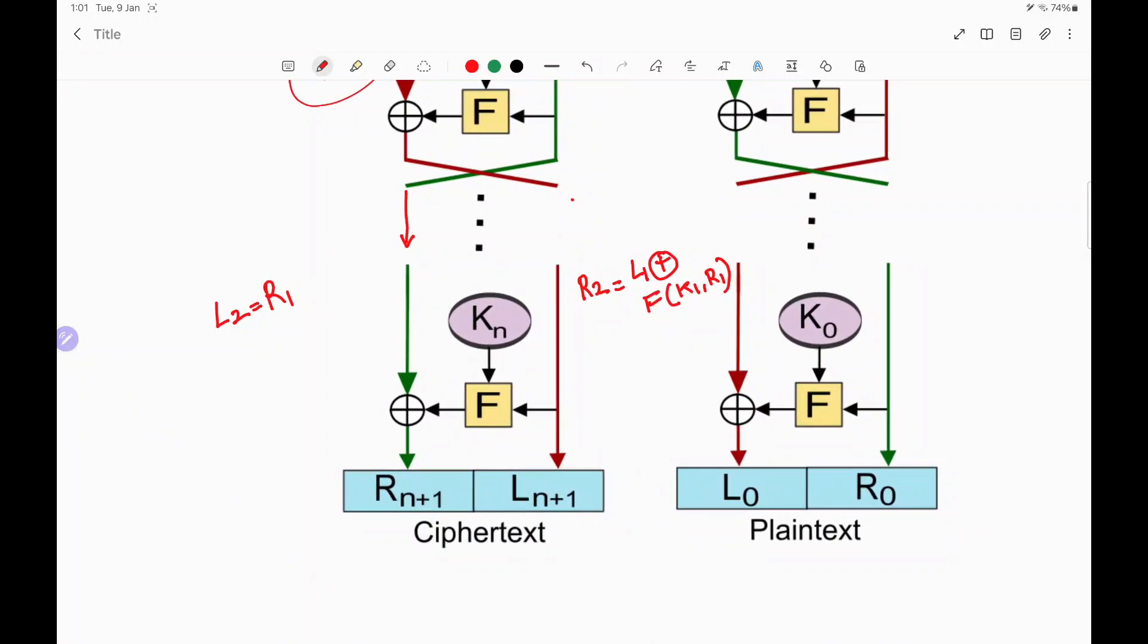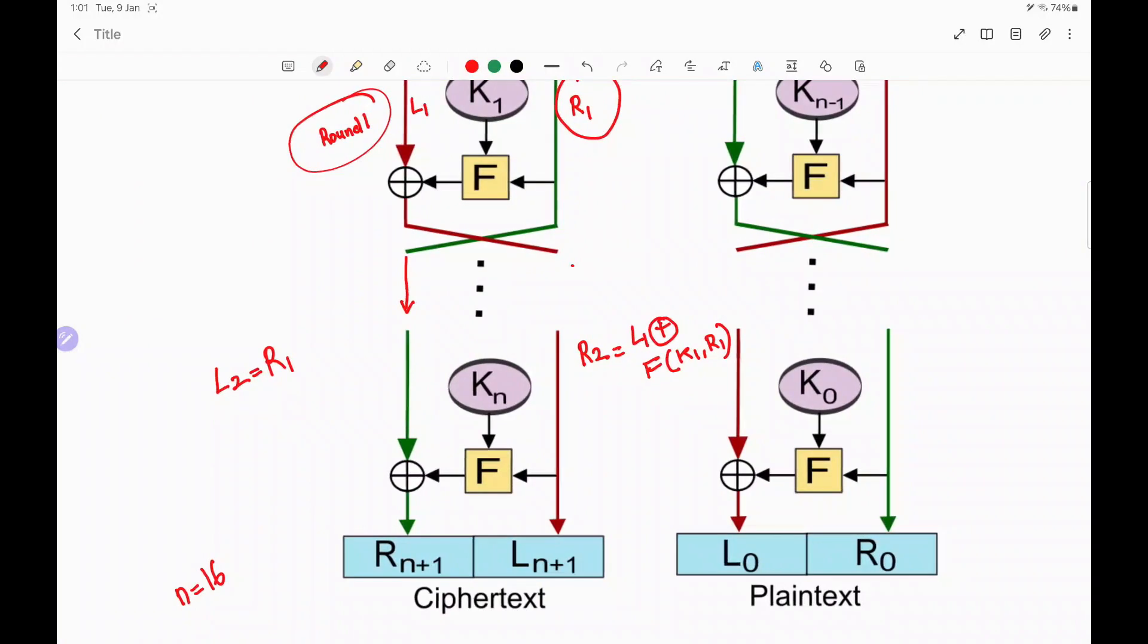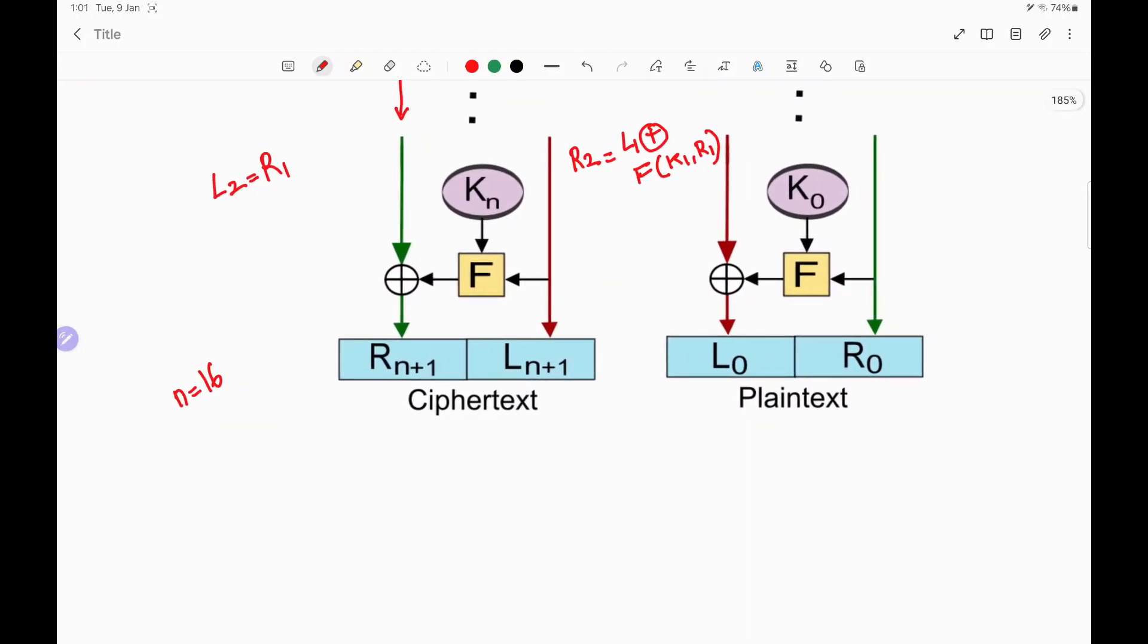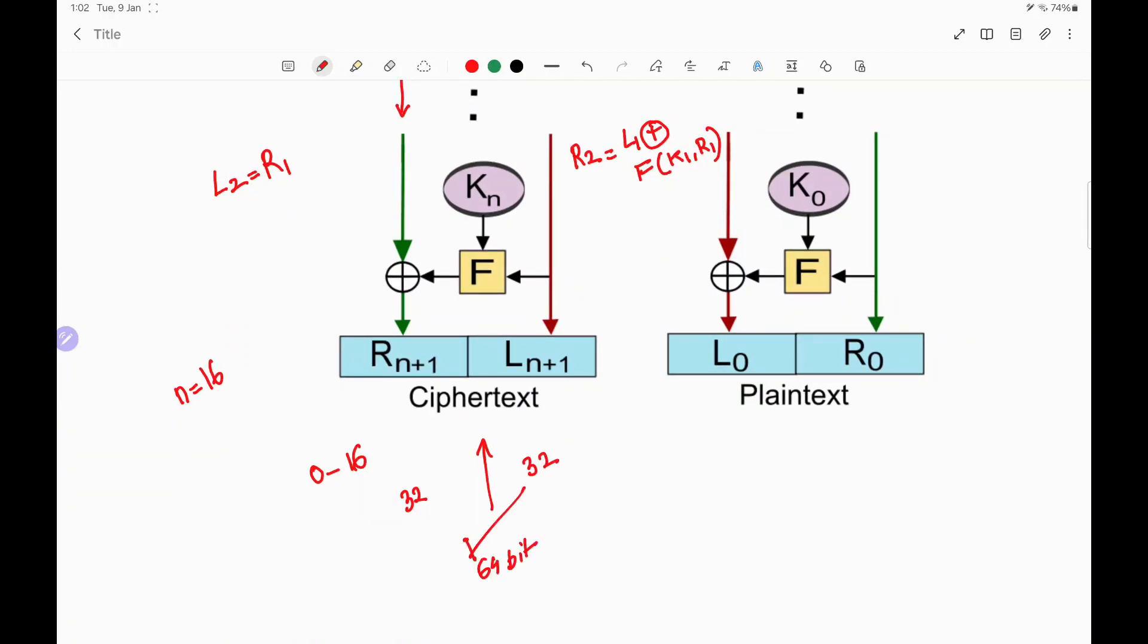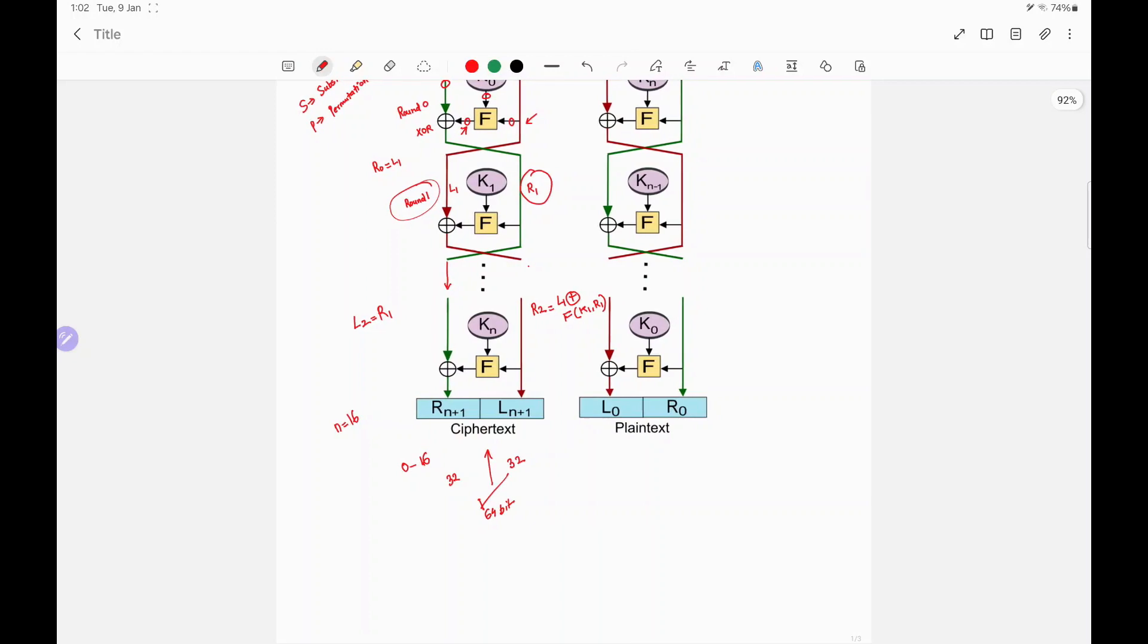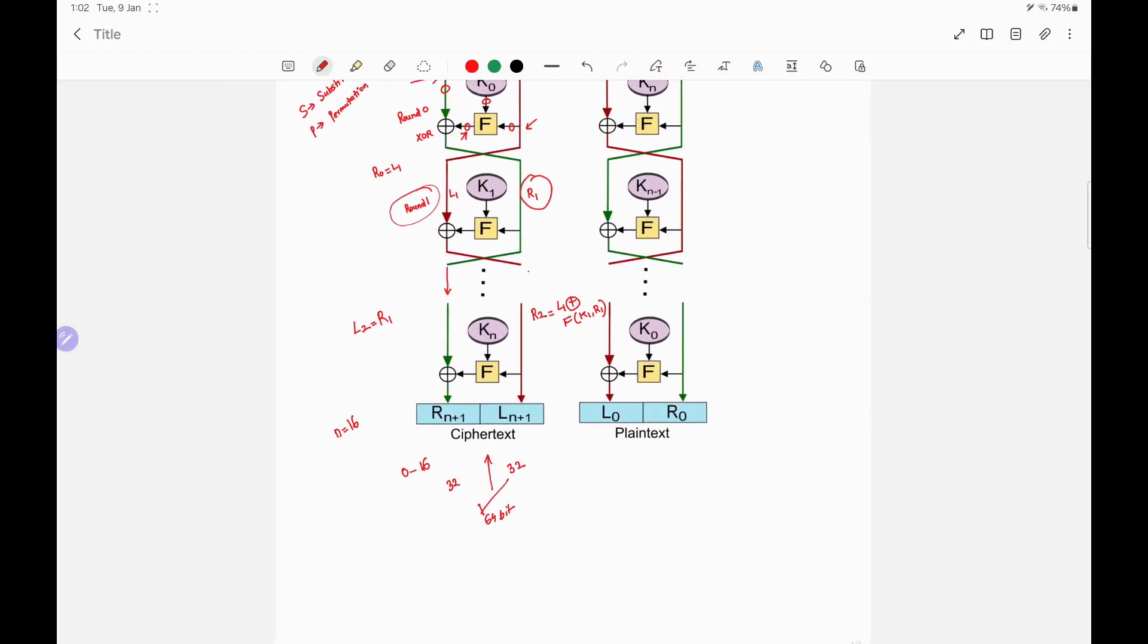And this goes on till the nth round. Ideally, in the case of data encryption standards, you will come to know later that we take n as 16. So if you are starting with R0, we'll go till R16. That is, if n is 16, we will start from 0 till 16 because it is Rn plus 1 and Ln plus 1. So this entire process goes on. And at the end, we get 32 bits of LPT and 32 bits of RPT. When we concatenate that, we get a 64-bit ciphertext.